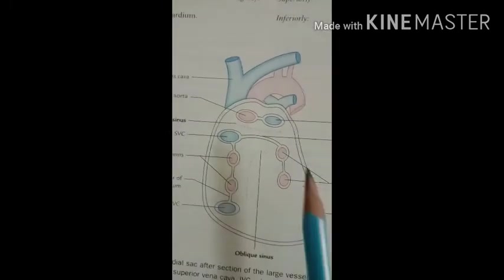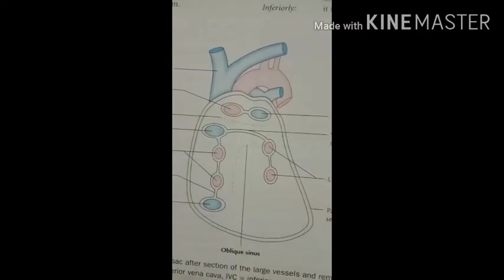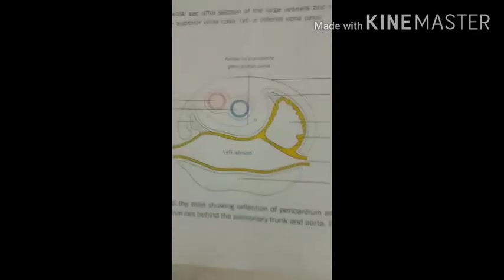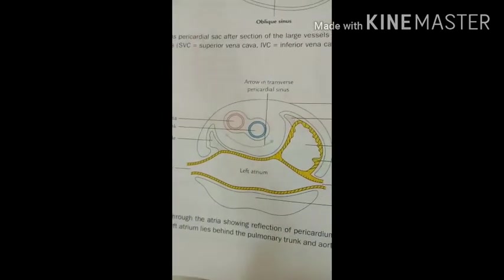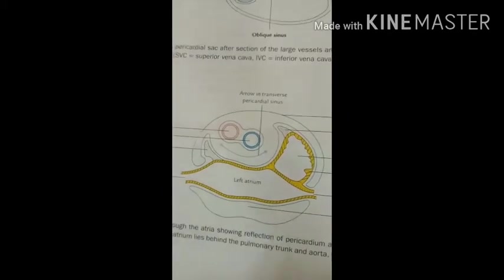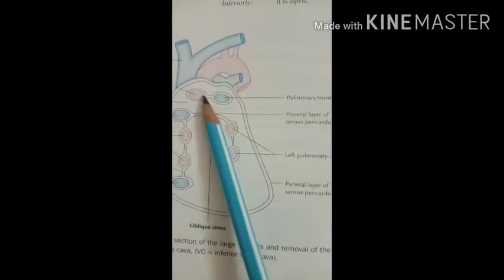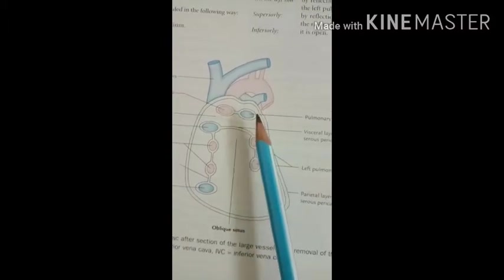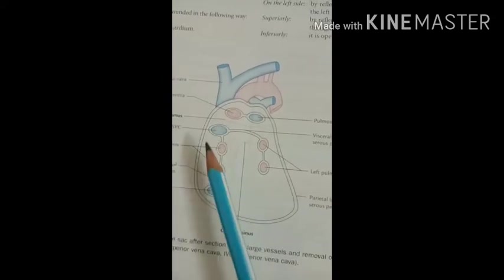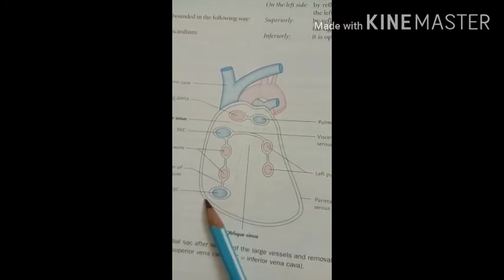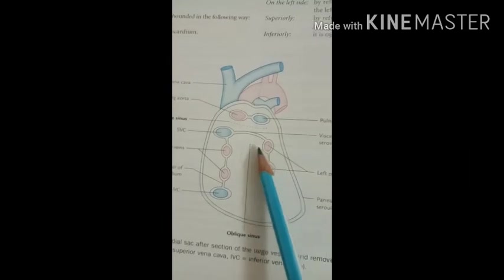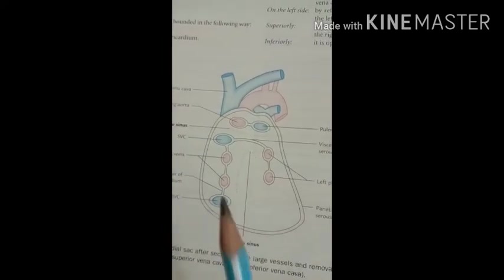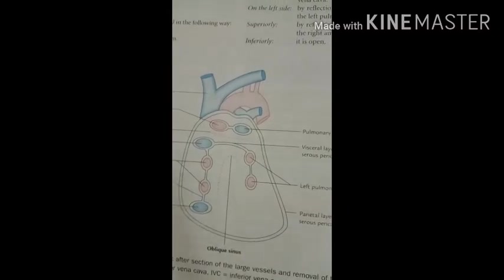The contents of the pericardium include: first, the heart with its cardiac vessels and nerves; second, the ascending aorta; third, the pulmonary trunk; fourth, the lower half of the superior vena cava; and fifth, the terminal part of the inferior vena cava and the terminal parts of the four pulmonary veins — two on the right and two on the left.